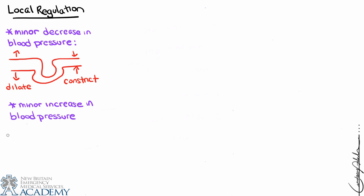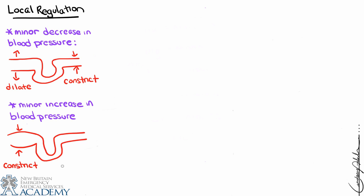Conversely, with a minor increase in blood pressure, increased stretch activates the granular cells to generate smooth muscle contraction, causing constriction of the afferent arteriole. As long as we constrict the afferent arteriole, we reduce the amount of blood entering, decreasing hydrostatic pressure in the glomerulus. This slows the rate of glomerular filtration — local regulation is all about keeping GFR constant.